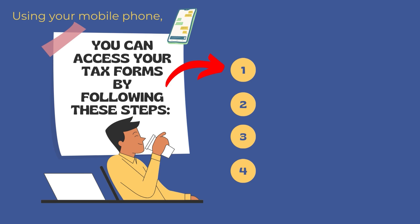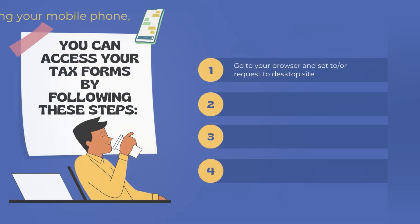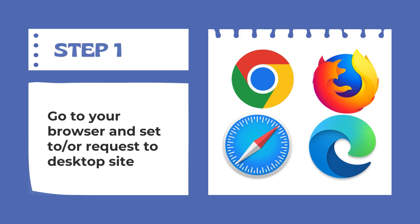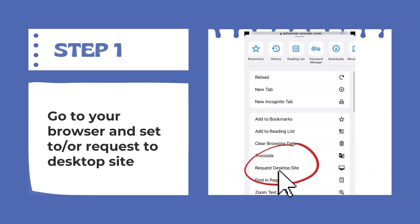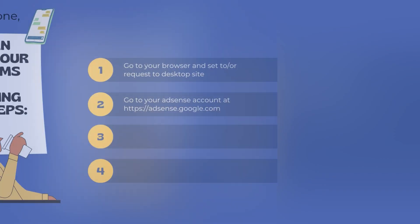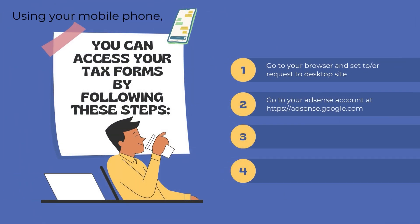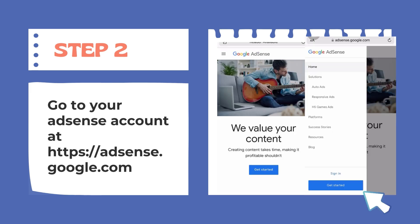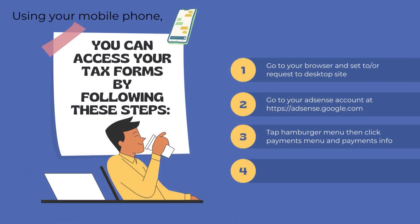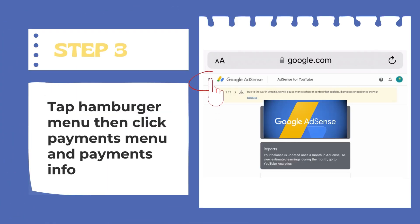Step number one: go to your browser and set to or request the desktop site. Step number two: go to your AdSense account at adsense.google.com. Once signed in, go to step number three.